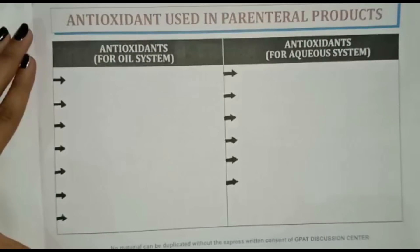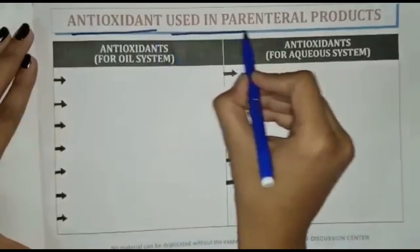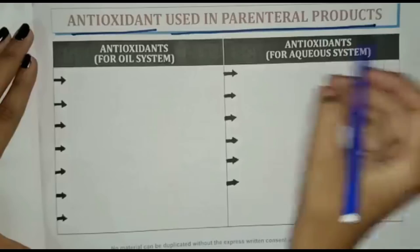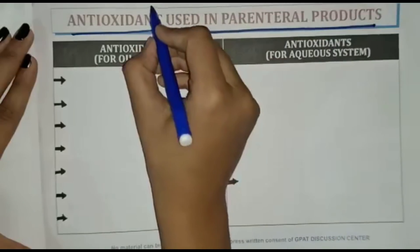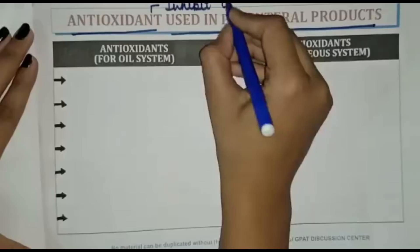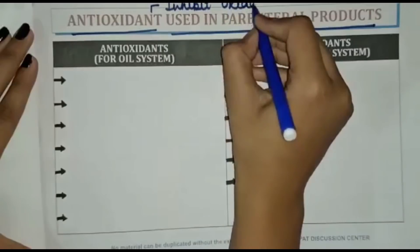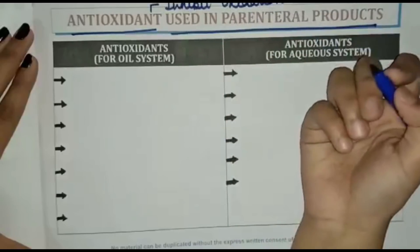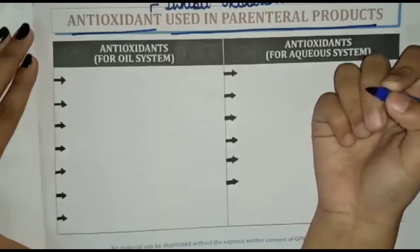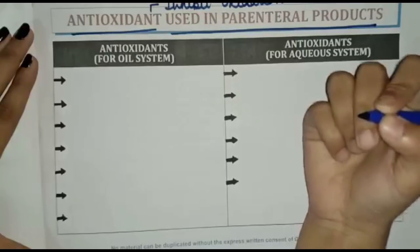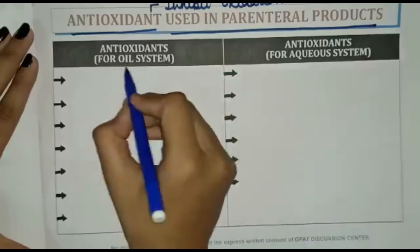Hello farmers and parents. Today in this video we will discuss about antioxidants used in parenteral products. Antioxidants are substances that inhibit oxidation. Antioxidants are used to prevent oxidative decomposition of pharmaceutically active compounds. There are different types of antioxidants used for oil systems and for aqueous systems.